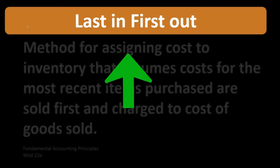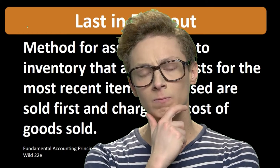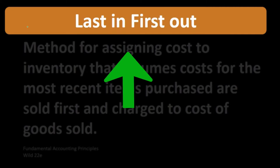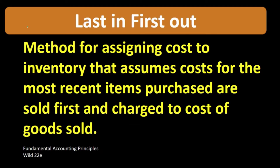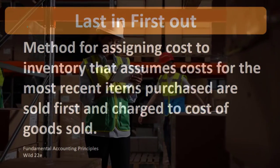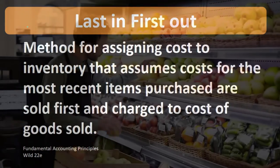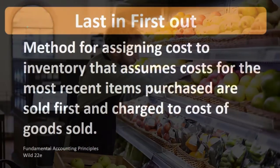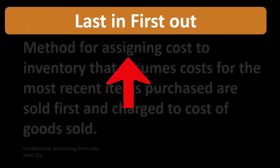Last in first out is usually more counterintuitive to most of our thinking. When we consider the physical flow of inventory, we generally think the first unit we purchase would be the first unit we sell. But without specific identification, we can assume the opposite — that the units being sold are the last ones we purchased. You can imagine stacking shelves by putting new items in front of old ones, so you always sell the newest stock first. It's just a cost flow assumption; it doesn't necessarily match the actual physical flow.